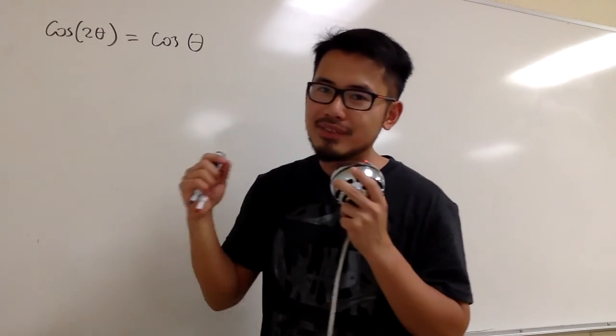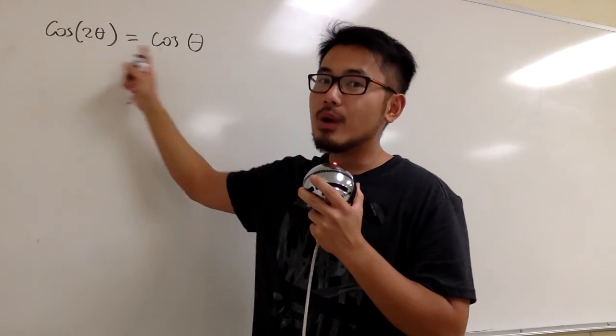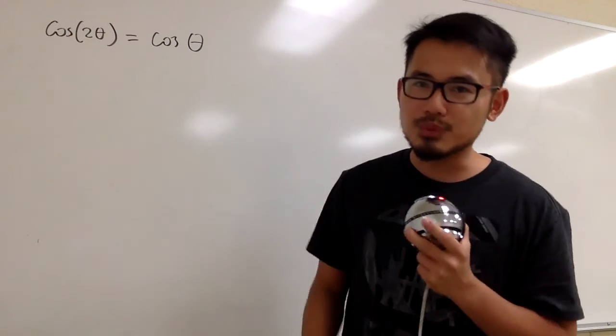Look at this one. We have a double angle formula for cosine, right? Which one should we use? Well, we have the cosine θ here, so we should use the one that involves cosine θ as well.